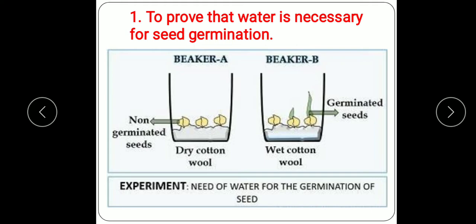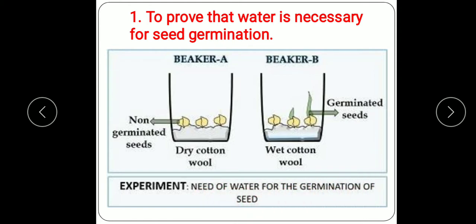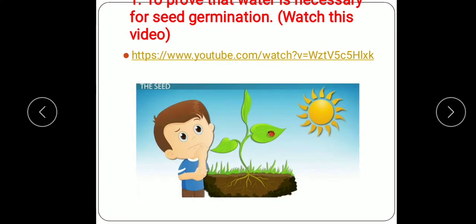After two days, we observe that there is no germination in the seeds placed in beaker A, while germination starts in the seeds of beaker B. The reason is clear: no water is available for germination in beaker A, so no germination is observed. In beaker B, germination has started. We conclude that water is needed for the germination of seeds. This is a simple experiment you can also do at home.